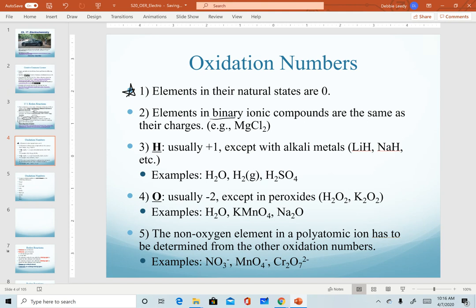Elements in a binary ionic compound, you already know how to assign oxidation numbers. These are assigned the same way that we identify ion charges. So recognize that magnesium chloride is still considered binary because there are only two elements in here. We know that magnesium has an oxidation number of two plus. Each chloride ion has an oxidation number of a minus one.